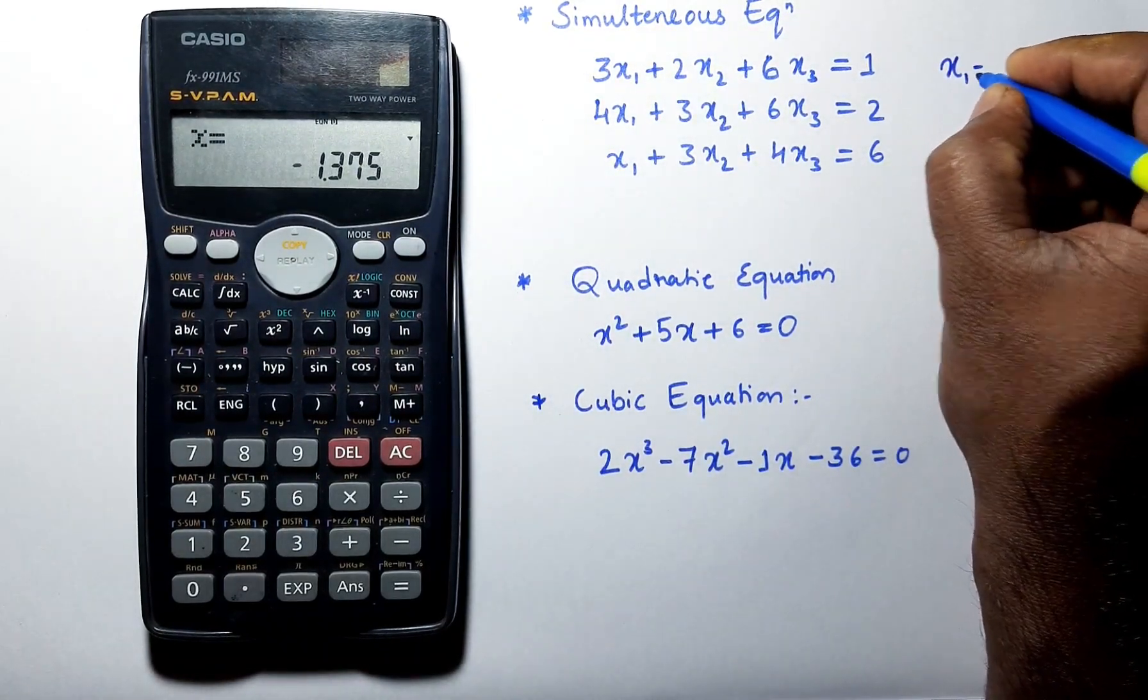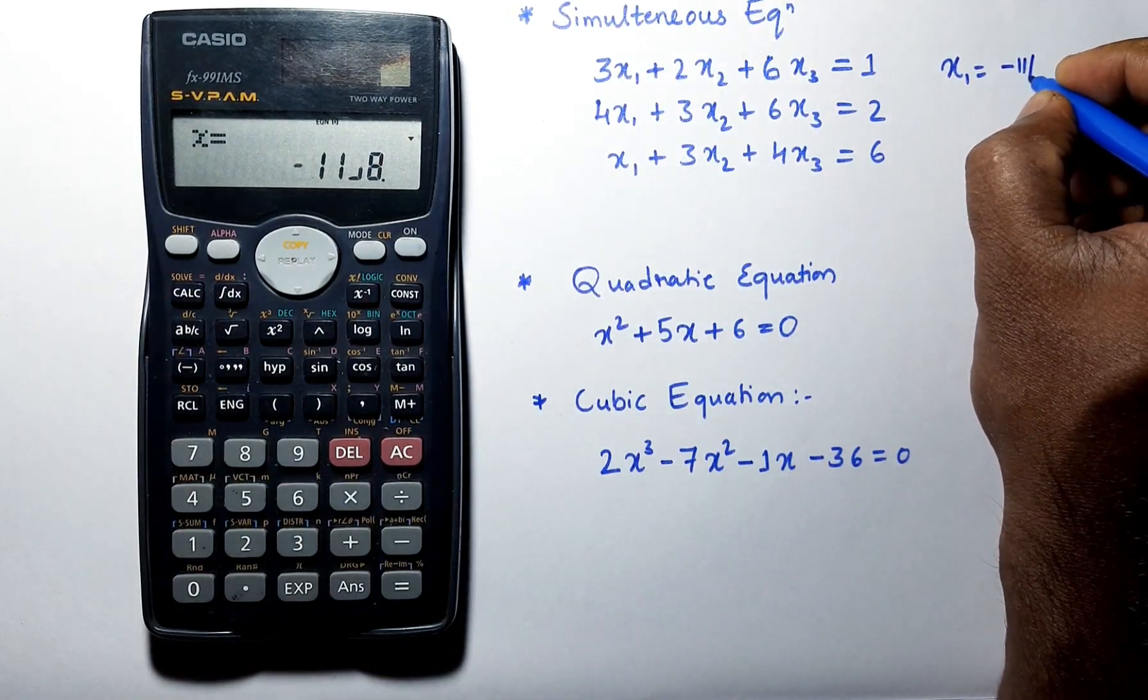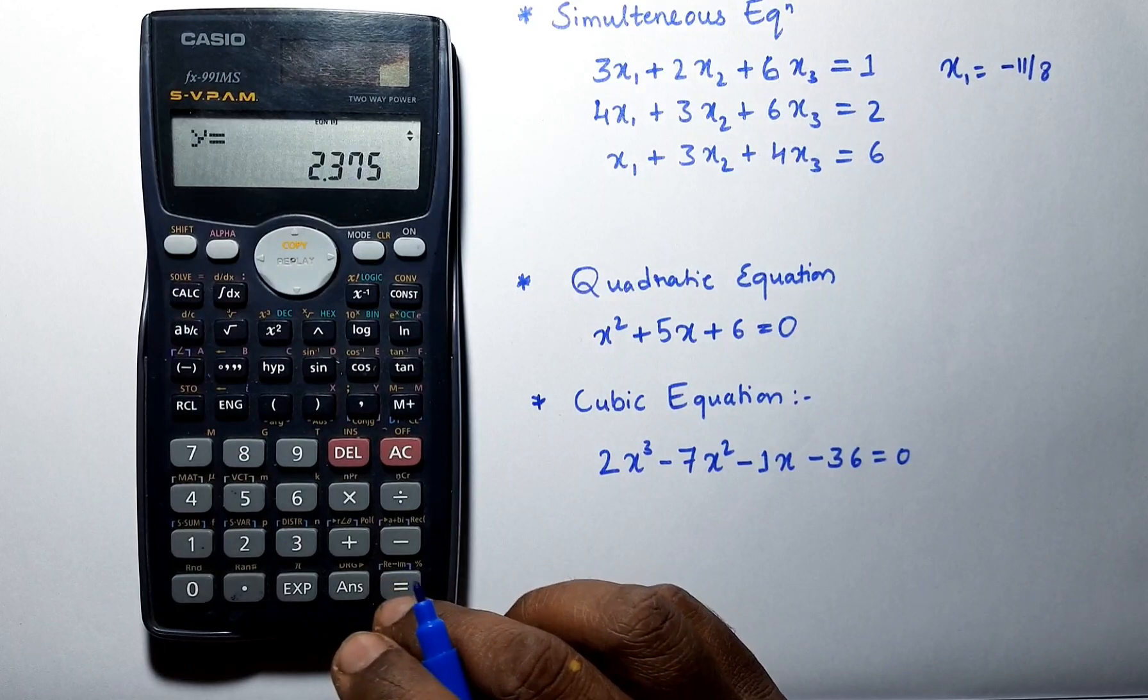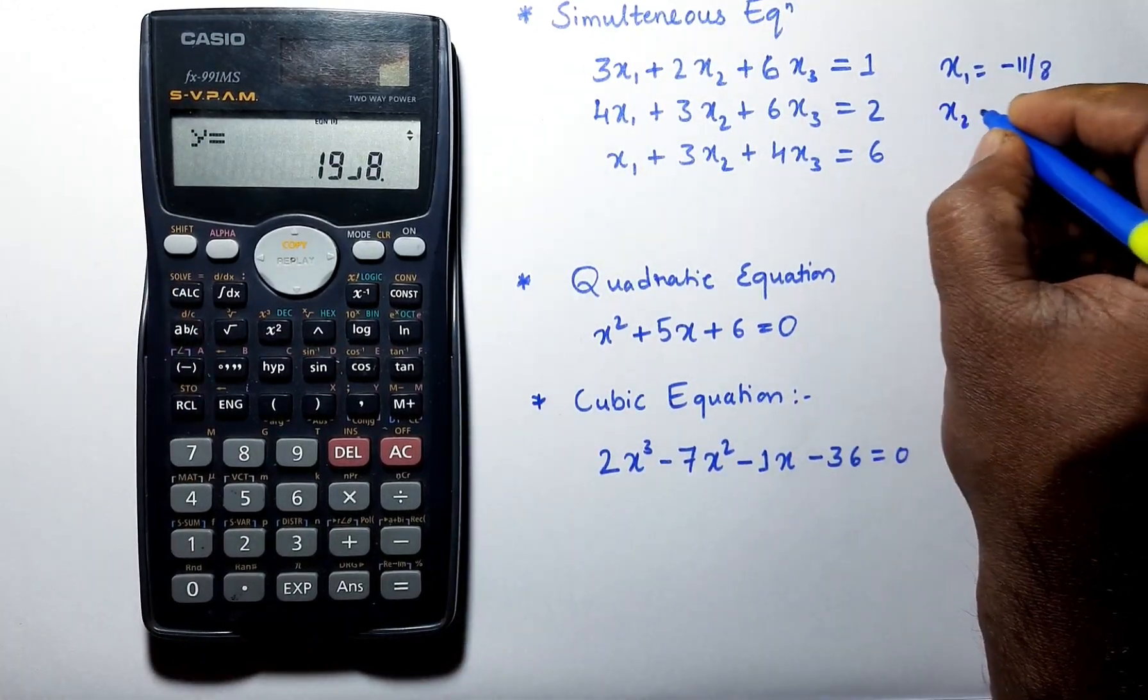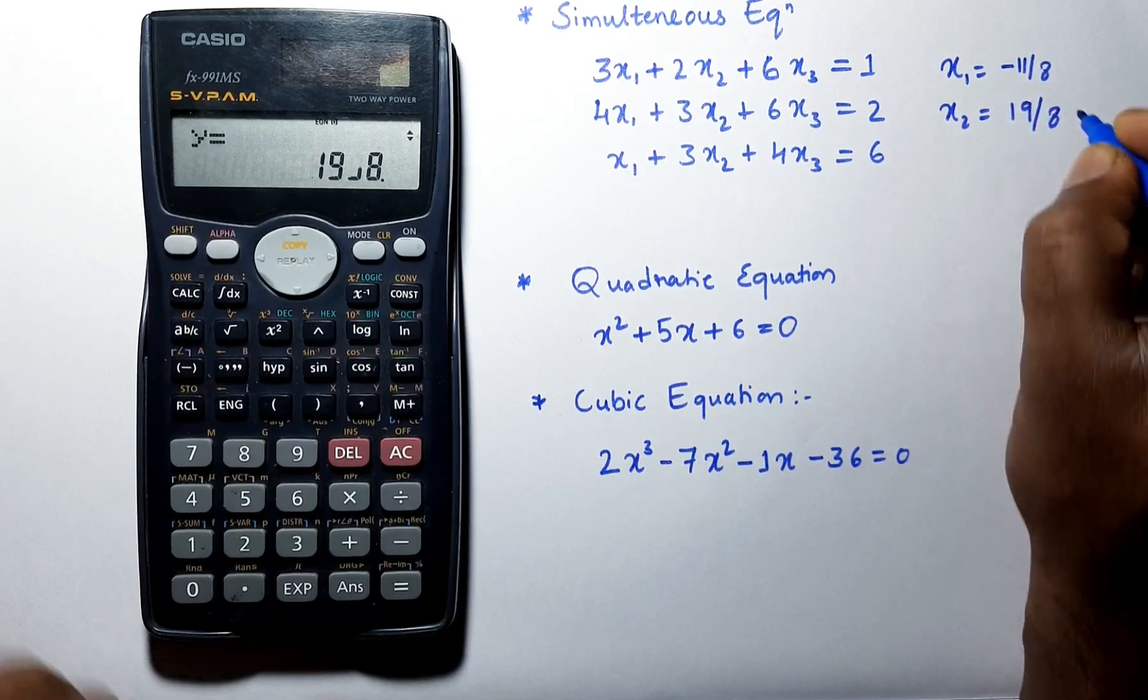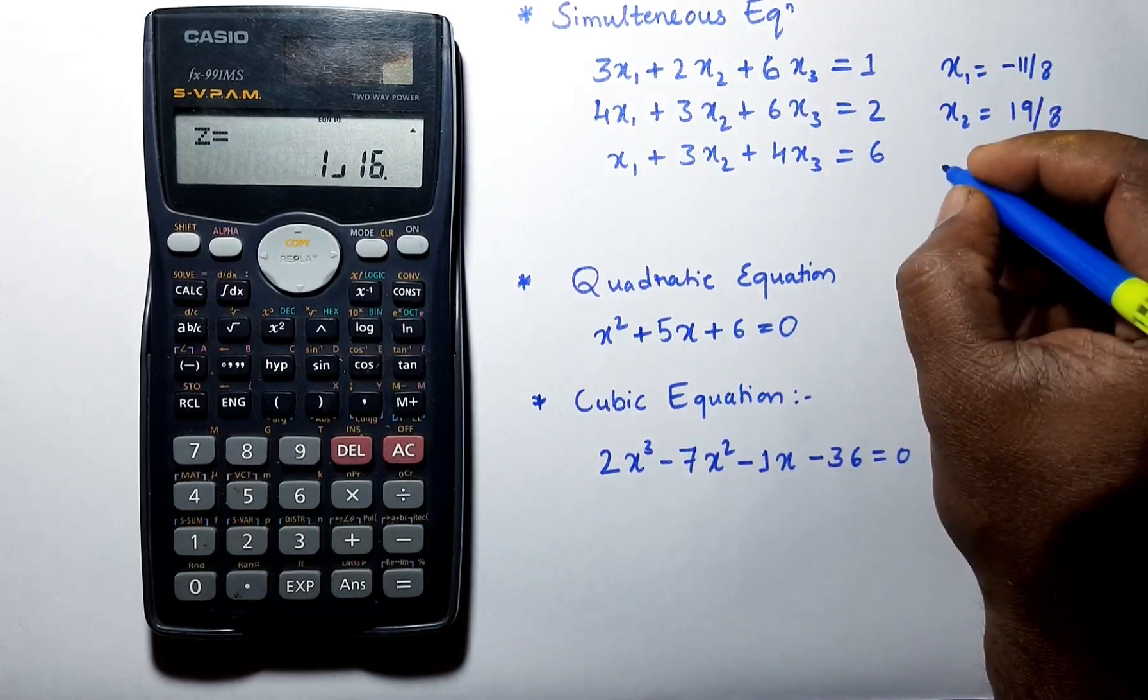x1 is equal to... Let's convert it into fractions. Next answer is 2.37. In fractions, it is 19 by 8. Next one is 1 by 16.